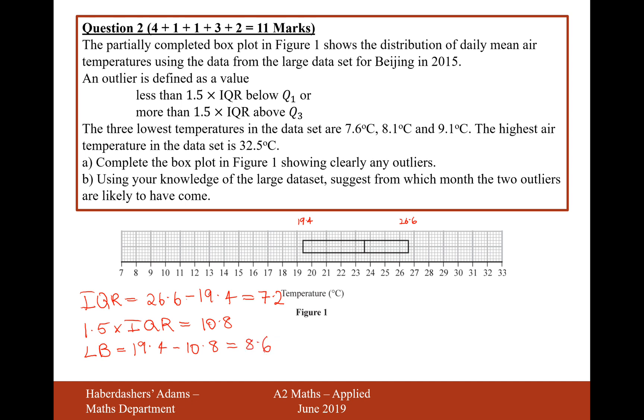So 8.6 is the cutoff point for outliers. So it's going to be 7.6 down here, that's going to be marked with a cross. So that point there is at 7.6. The next point is going to be at 8.1.